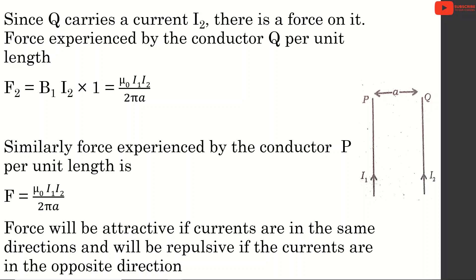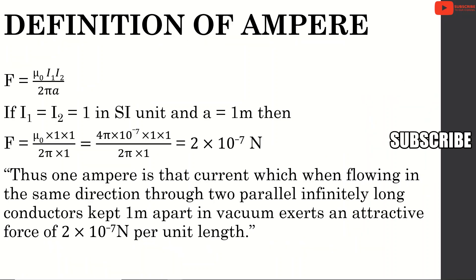When currents flow in the same direction, the force is attractive. When currents flow in opposite directions, the force is repulsive, and equals mu0 I1 I2 divided by 2 pi A.